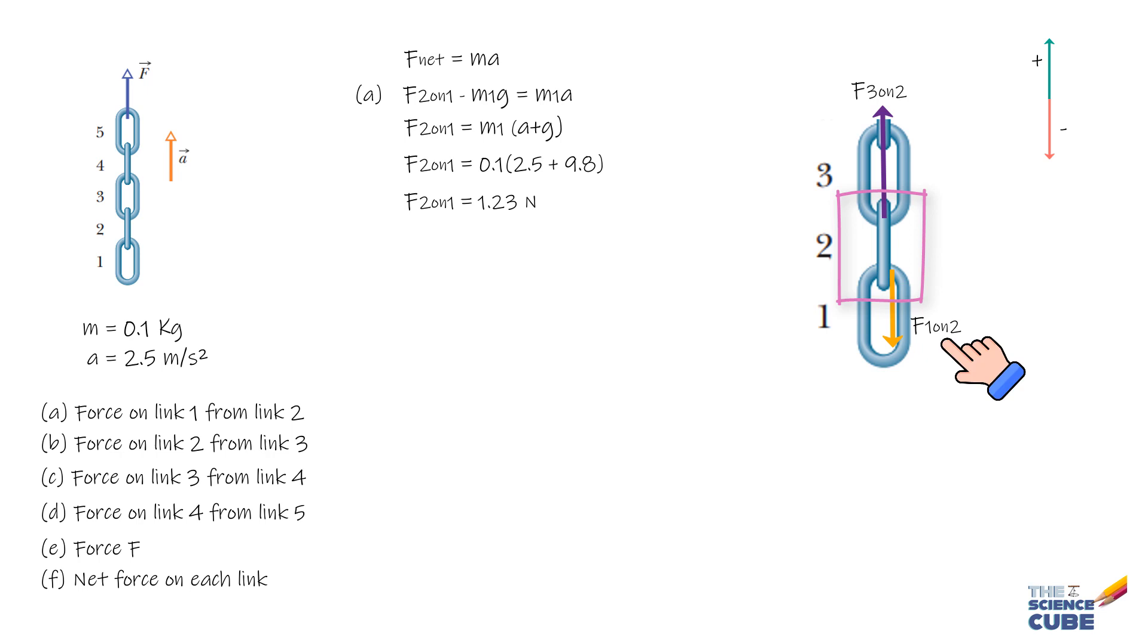By Newton's third law, this force should be the same in magnitude as the force with which 2 is pulling on 1, which we have already calculated as 1.23 Newtons. Then we have M2G acting downwards, and this entire net force should equal M2 times A.